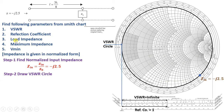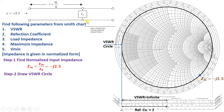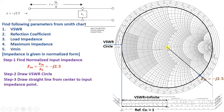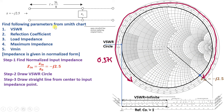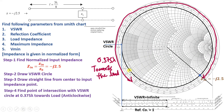The third task is to identify the load impedance. Load impedance is identified by moving our position on the Smith Chart. Since we are given the input impedance, we need to move towards the load direction, which is the anti-clockwise direction on the Smith Chart. First, we draw a straight line from the center to the input impedance point.